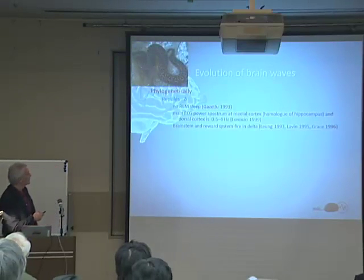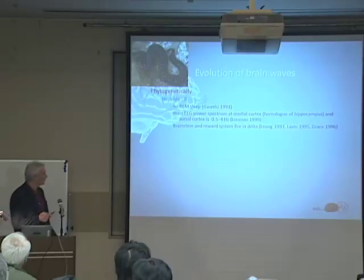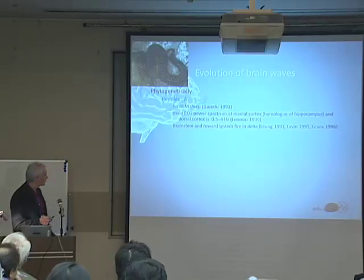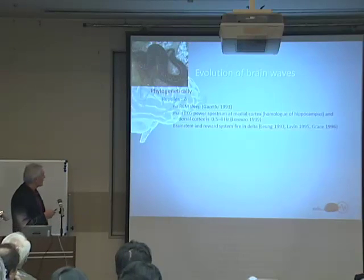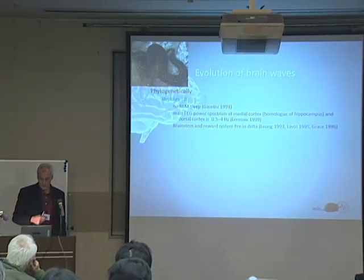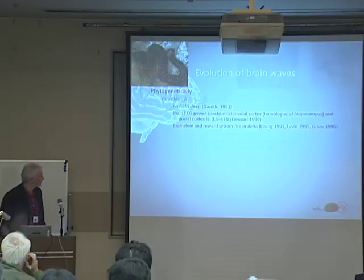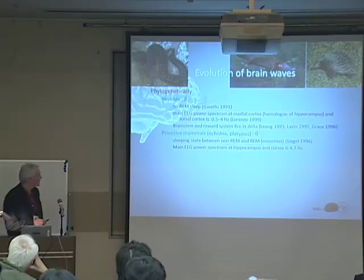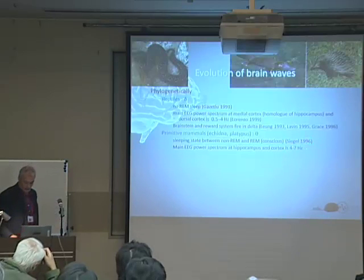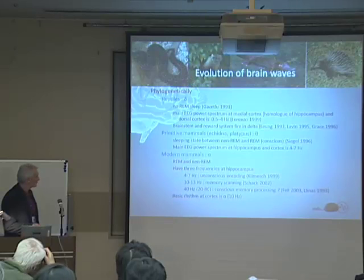These oscillations have been preserved throughout evolution and consist of frequencies going from 0.5 Hz to about 500 Hz, and there seems to be a linear progression on a natural logarithmic scale. You can find these oscillations in very primitive animals as well as in humans, and they seem to have similar functions. For example, in reptiles the main power spectrum of the EEG in the medial cortex is delta, which is clinically the lowest frequency routinely used in clinical practice. Delta activity is what you see in the brainstem but also in the reward system, which is most likely a misnomer and should perhaps better be called a learning system. In more primitive mammals, the main EEG power spectrum at the hippocampus is 4 to 7 Hz, which you still see in modern mammals such as humans, although at the cortical level the main frequency is at least alpha.